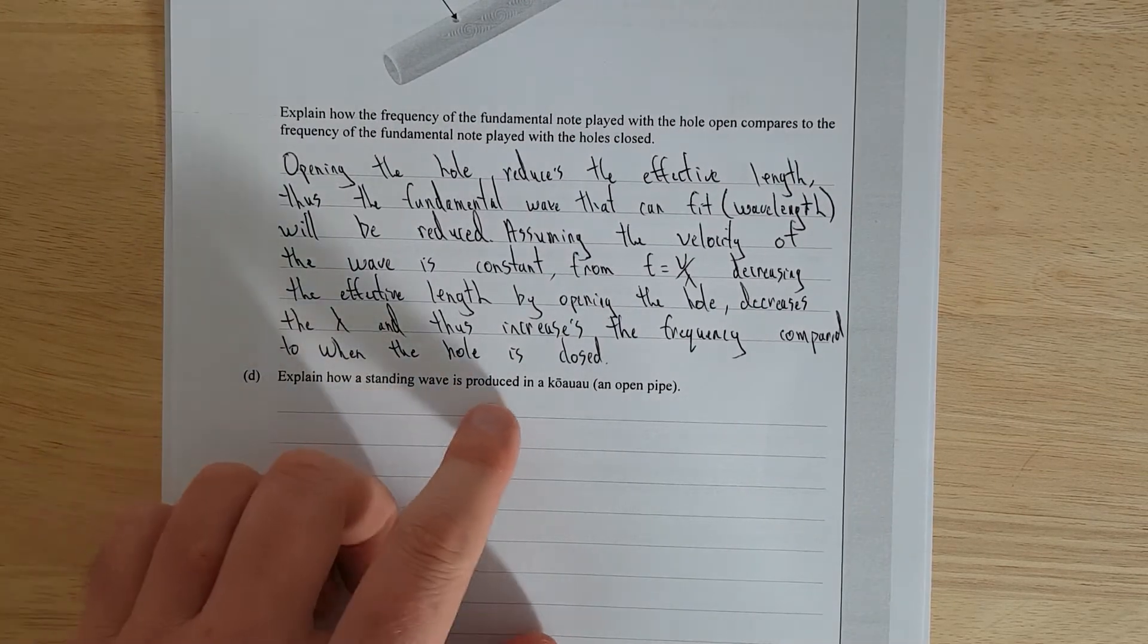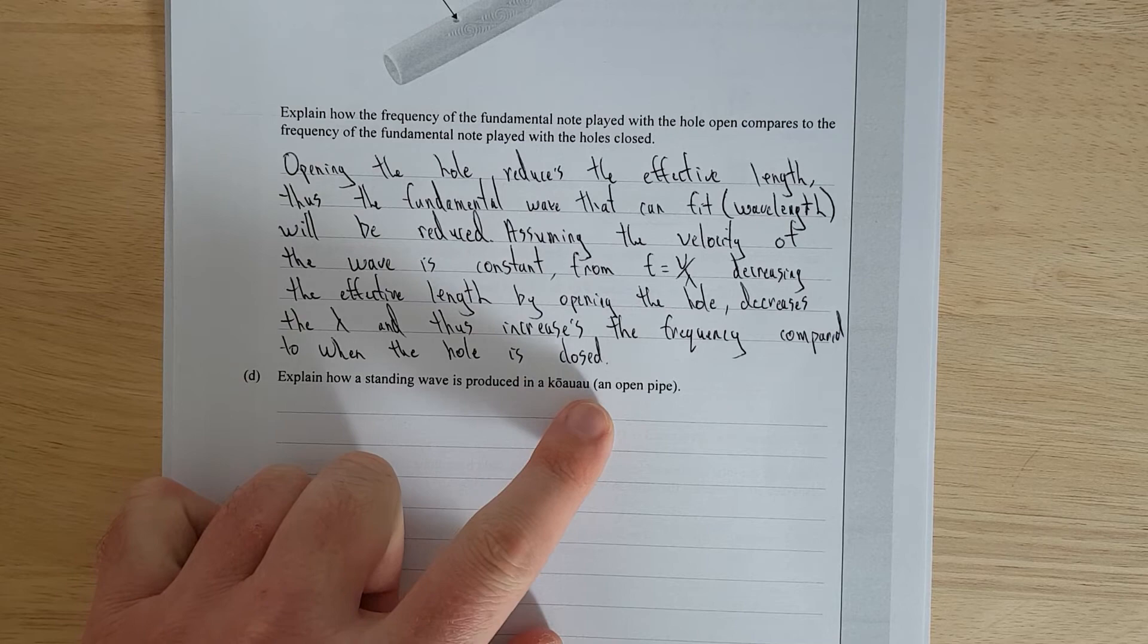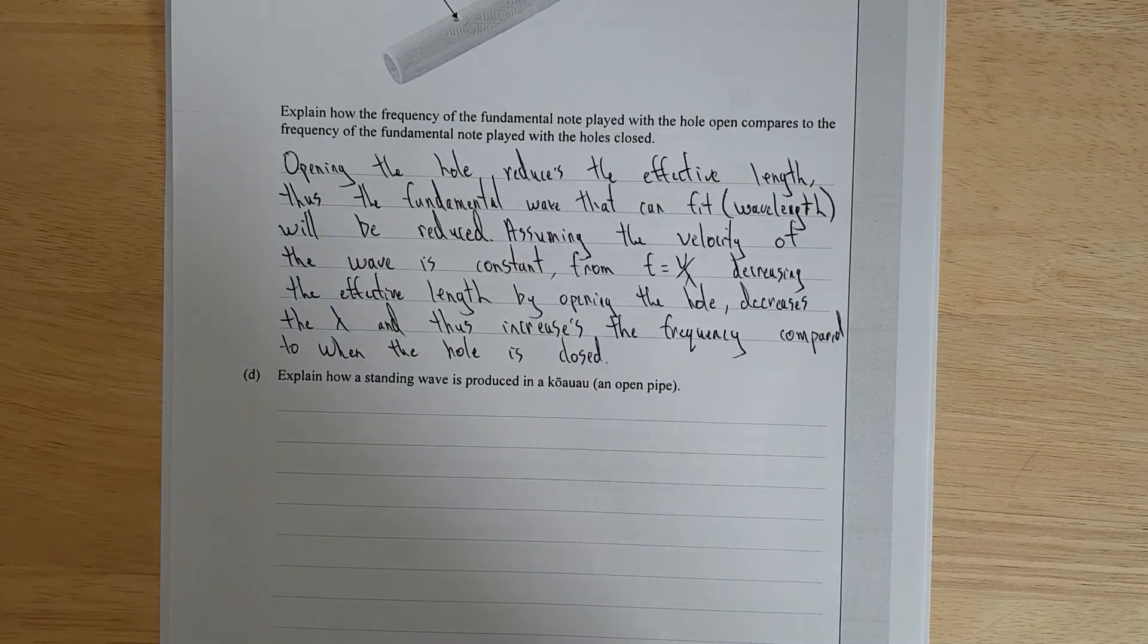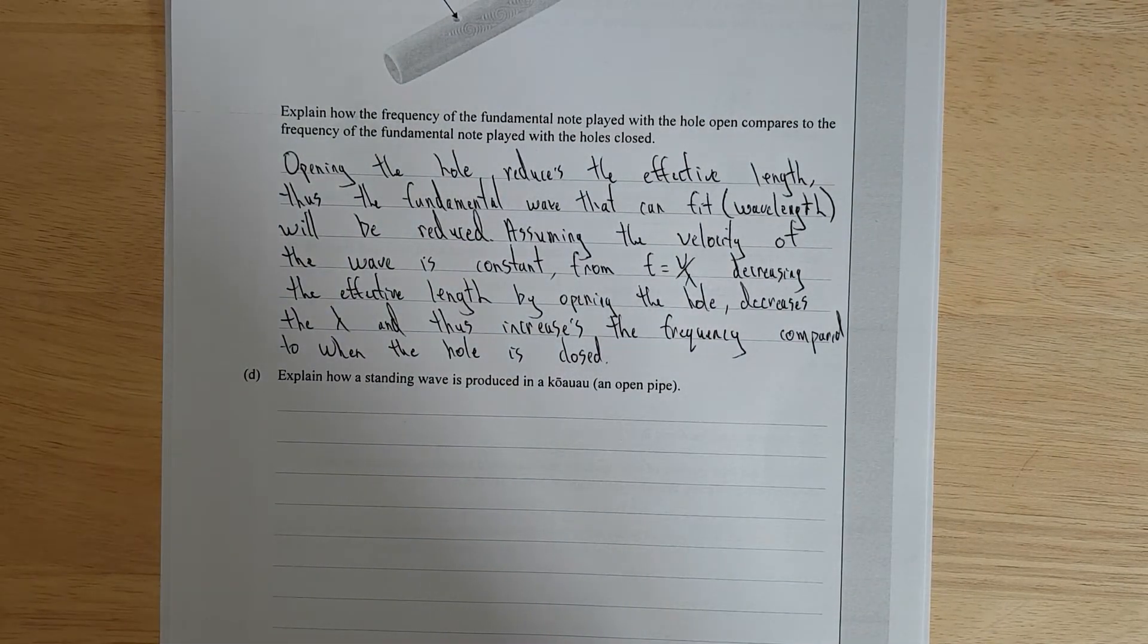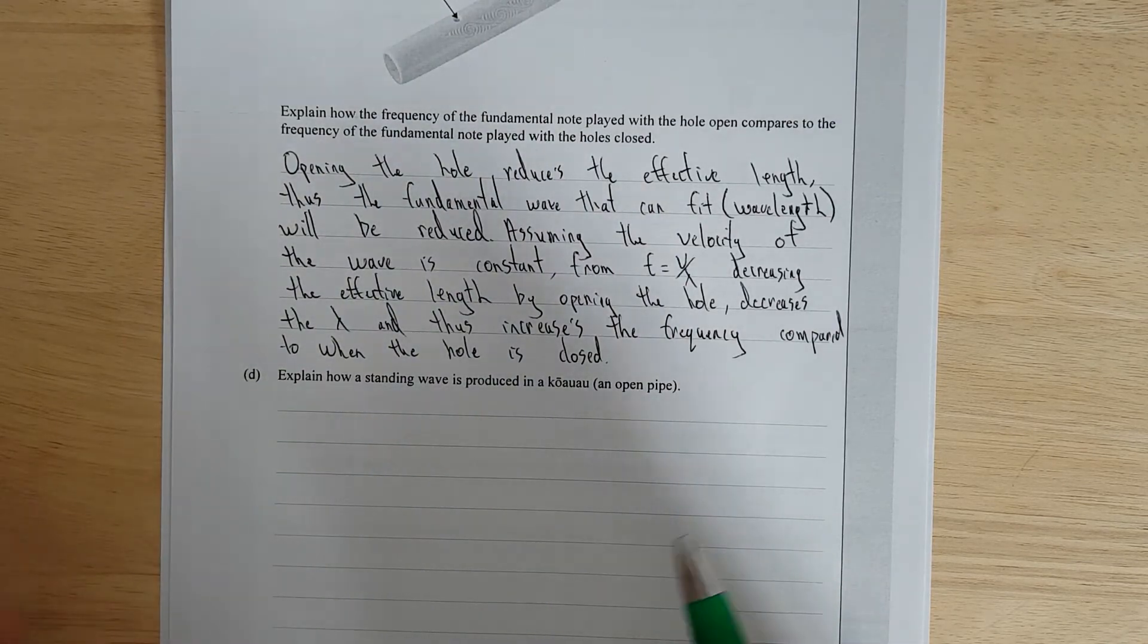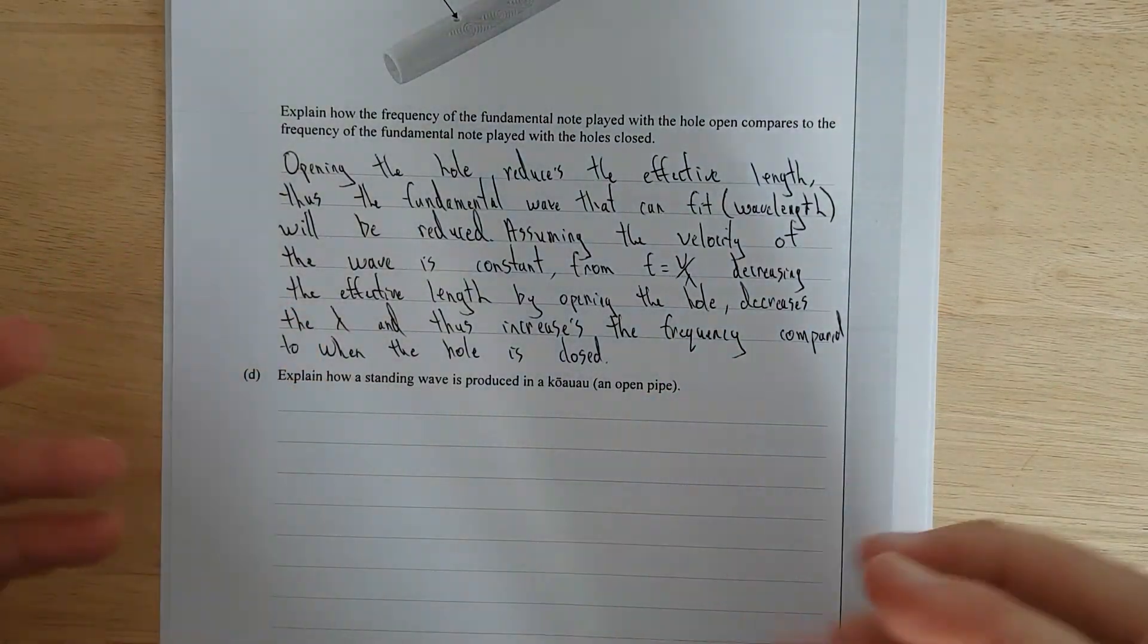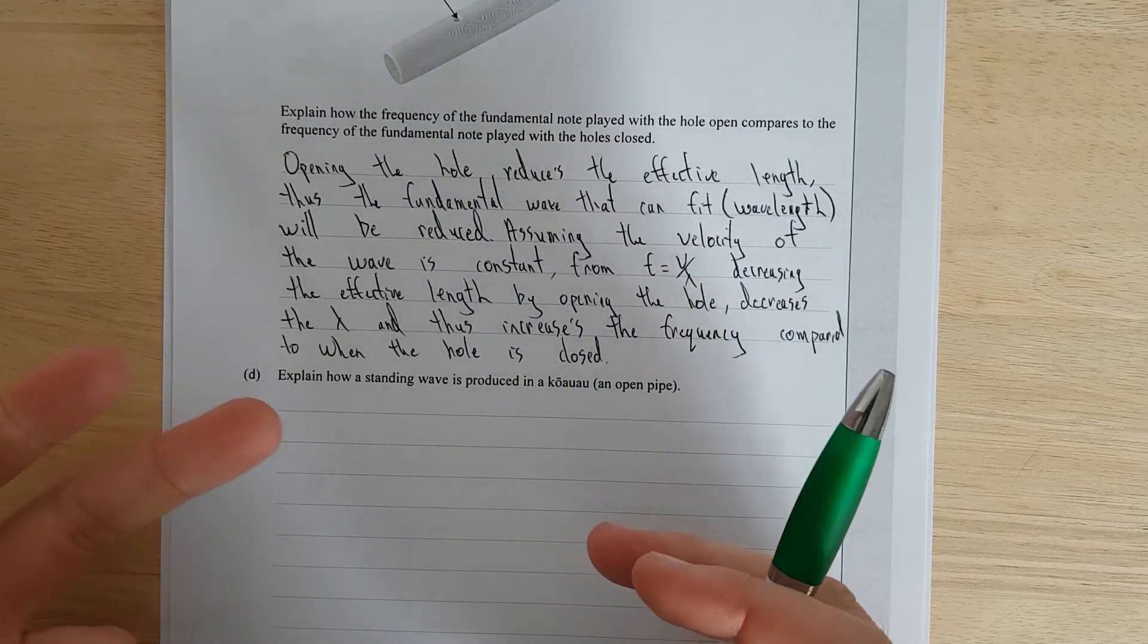Explain how a standing wave is produced in the kōrauatau. I hope that's right. I mean, I'm practicing my pronunciations of English and Māori, because I suck at pronouncing English as well. But anyway, right, so how are we going to go about explaining this, and what do they probably want to know? So this is an open, in order for a standing wave to be produced, the go-to answer is you've got to have two waves coming in together with the same amplitude, with the same frequency, which constructively and destructively interfere, which then creates a standing wave.